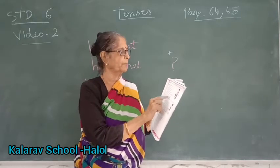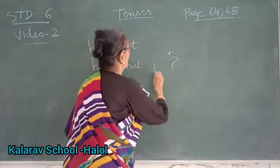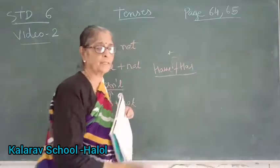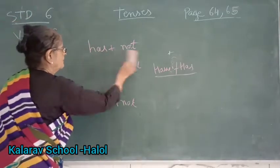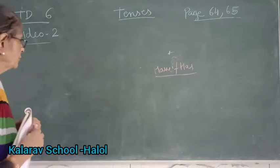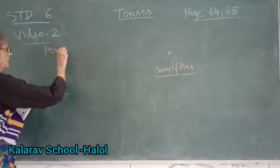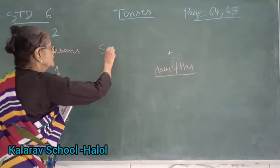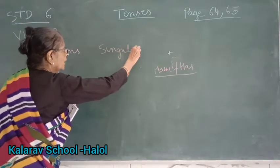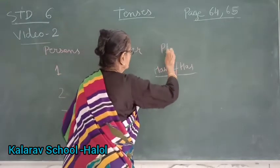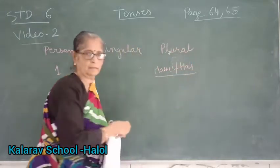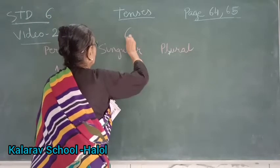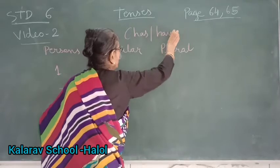Children, have and has — do you know the forms? We have to use them. For that we should know persons. How many persons? First person, second person, third person. Singular means only one, and plural means more than one. I am showing you the forms of has and have.